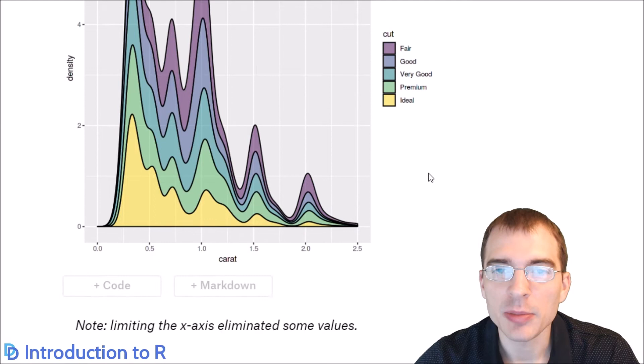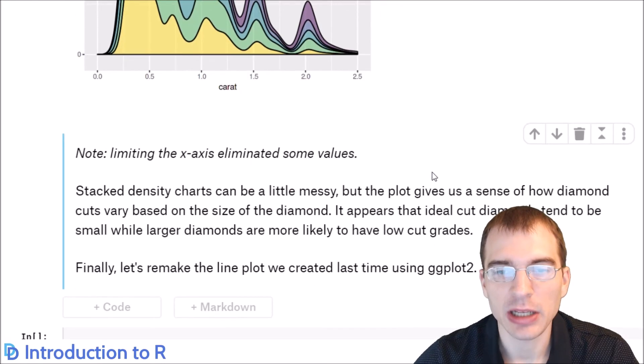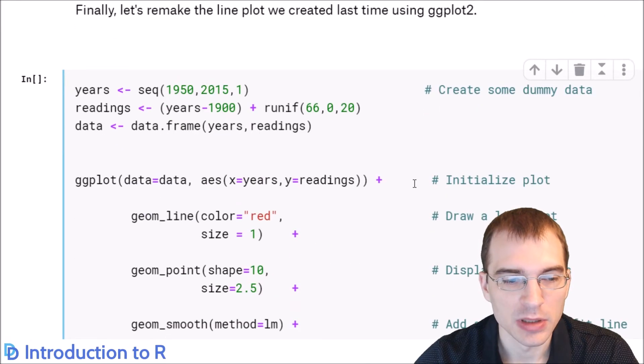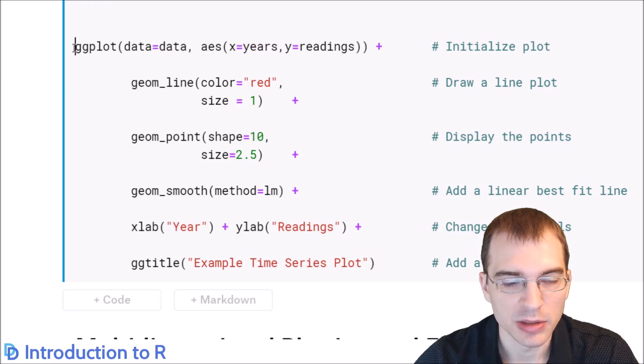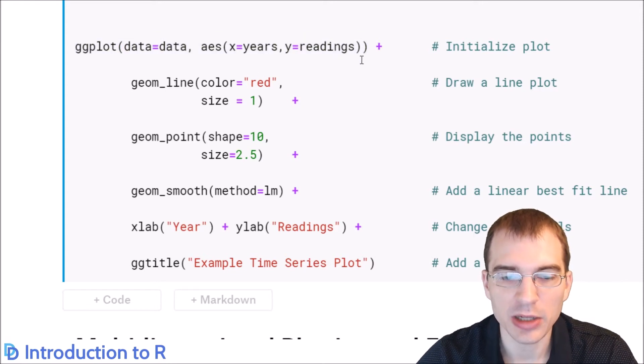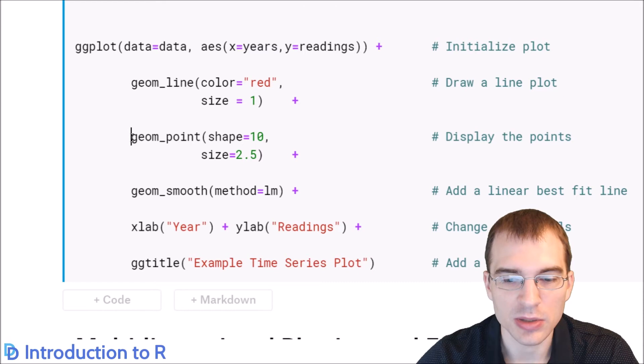Now we'll give an example of making a line plot by recreating the complicated line plot that we made at the end of the last lesson. First, we're going to recreate that same year data that we used. To create the line plot, we'll set ggplot to the new data. The aesthetics are years on the x-axis and the readings on the y. To make a line plot, we use geom_line. We're going to color it red. The size we'll set to one. We also want to plot the actual points at the vertices of the lines, so we'll also pass in geom_point to accomplish that.